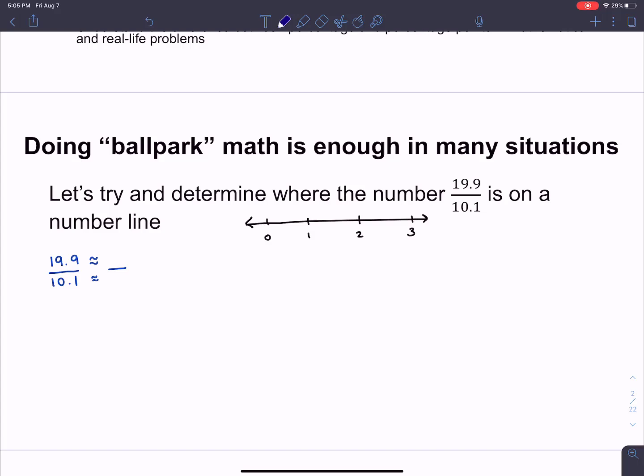So here's the first situation. We have 19.9 divided by 10.1. We're trying to figure out what number that comes out to on the number line. We don't need a calculator for this. So we have $19.99 and we're going to round this. The closest number to that is 20. And then we have 10.1 and the closest number to that is 10. We're picking integers, right? And then 20 divided by 10 is really easy. That's just 2. So then 19.9 over 10.1 is approximately 2.